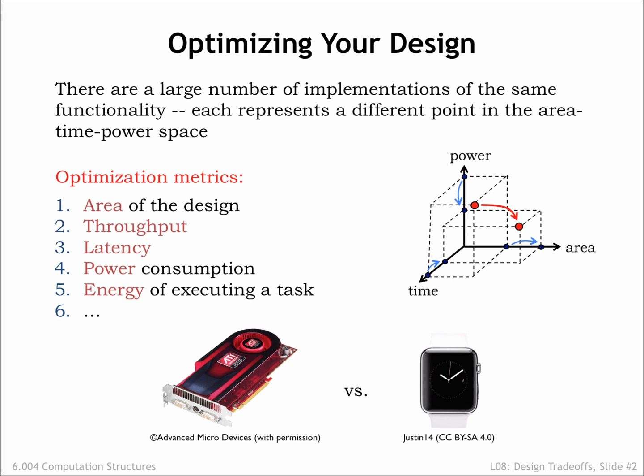The team building the watch has very different goals. Size and power consumption are critical, since it has to fit on a wrist and run all day without leaving scorch marks on the wearer's wrist. Suppose both teams are thinking about pipelining part of their logic for increased performance. Pipelining registers are an obvious additional cost. The overlapped execution and higher T-clock made possible by pipelining would increase the power consumption and the need to dissipate that power somehow. You can imagine the two teams might come to very different conclusions about the correct course of action.